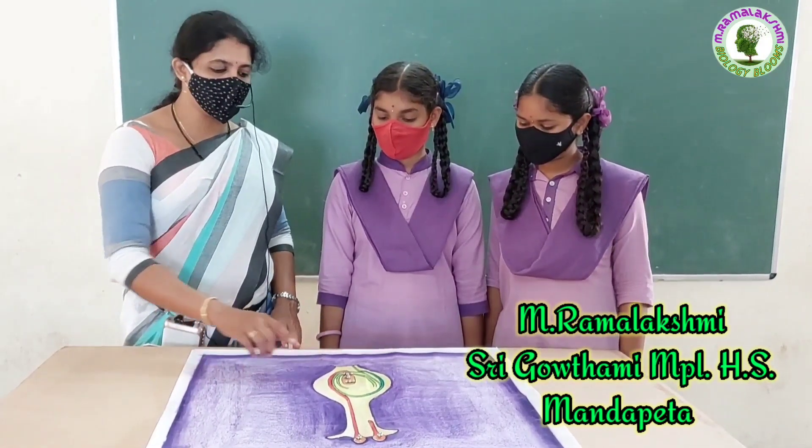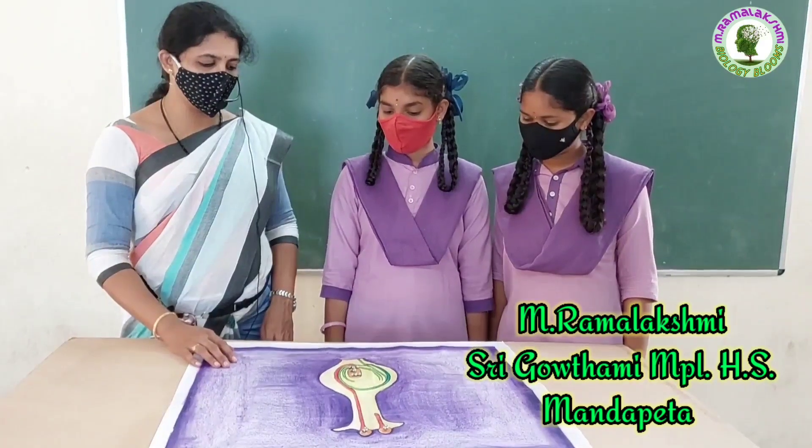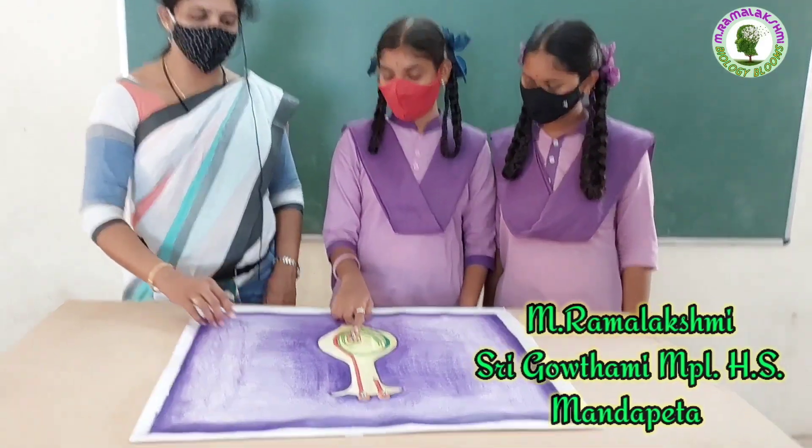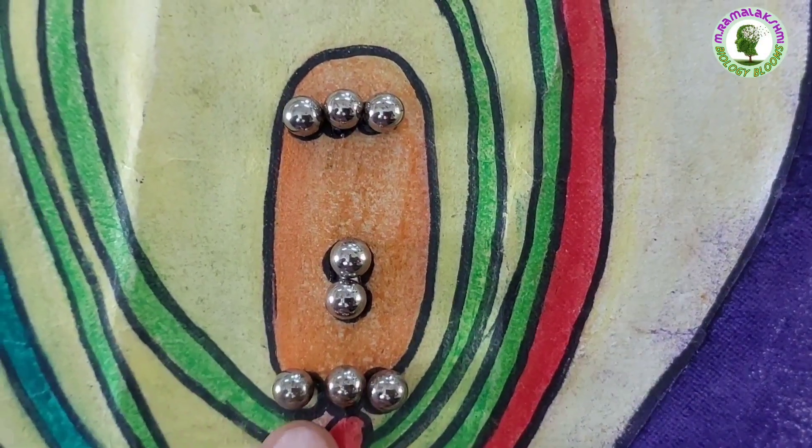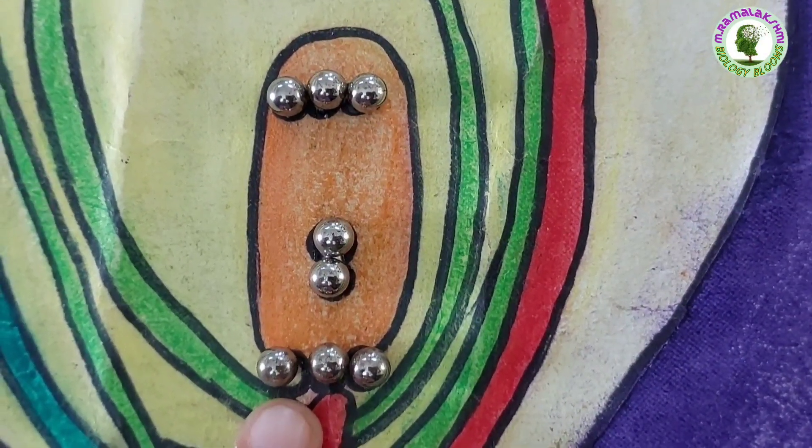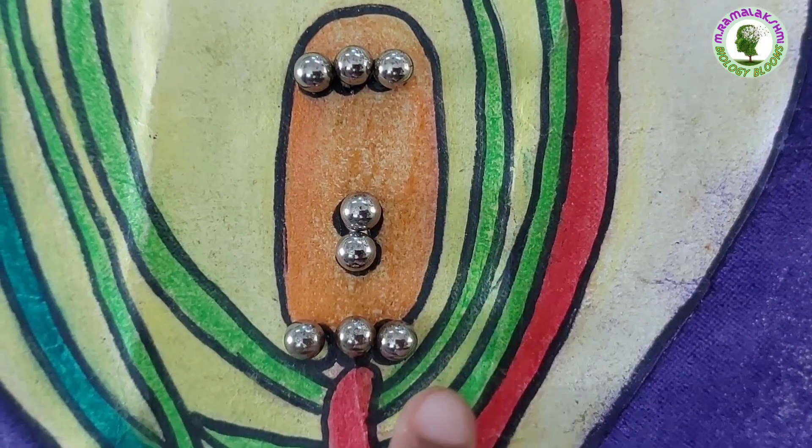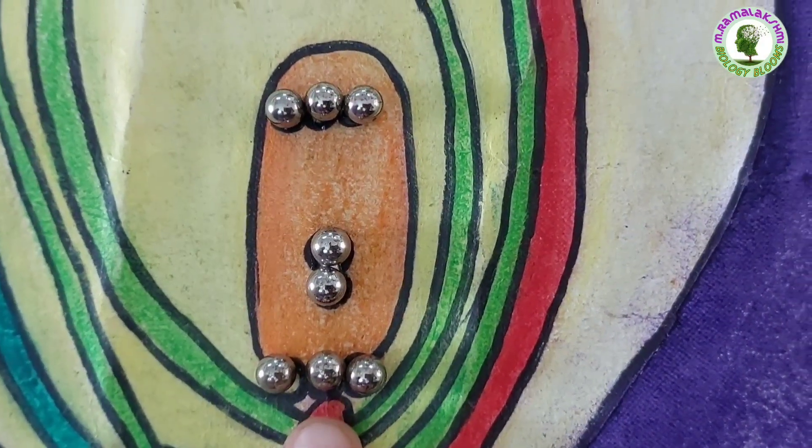Before the discussion of fertilization, first we will discuss the embryo sac. The majority of flowering plants have an embryo sac in the ovule consisting of 7 cells with 8 nuclei.